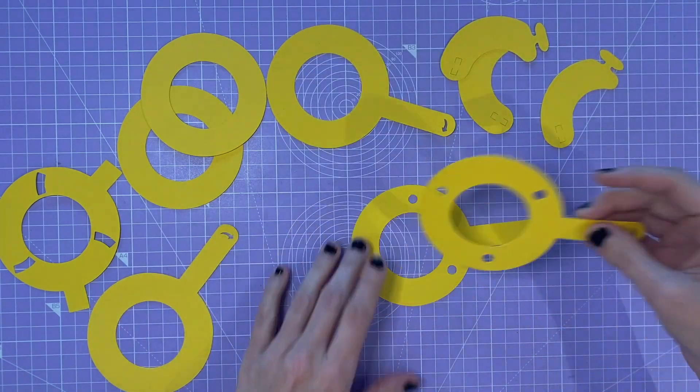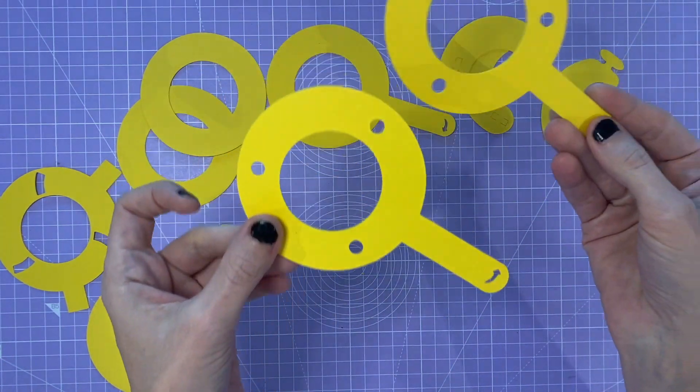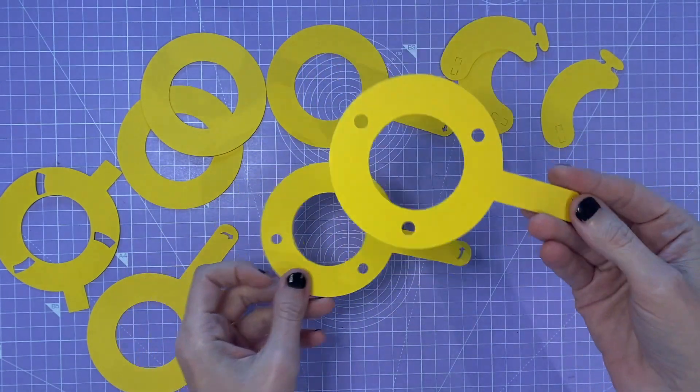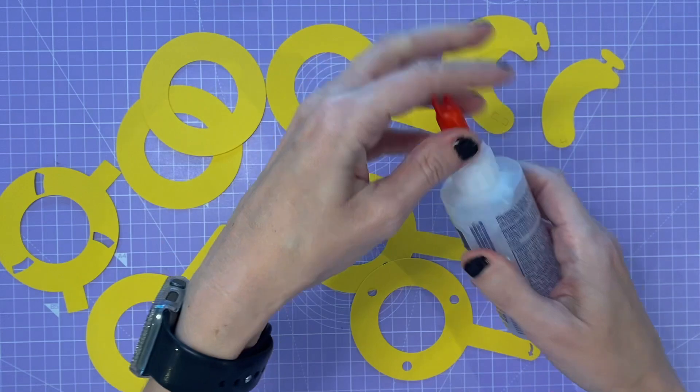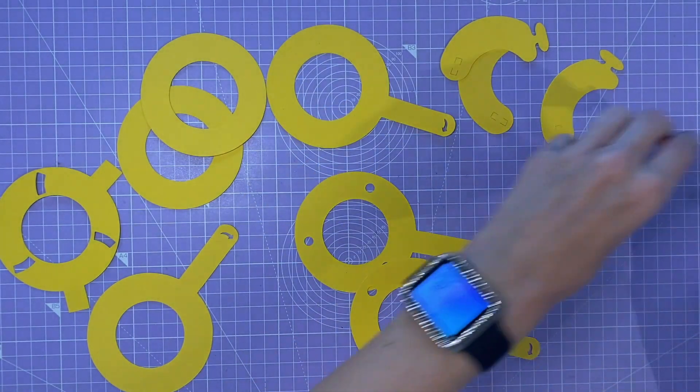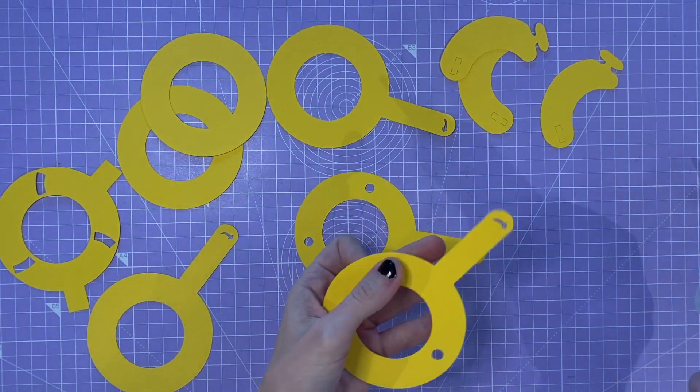So we have two of these with the holes in and we're going to start by adding this Beacon 3-in-1 to attach those together to make them stronger.